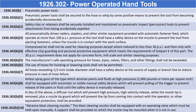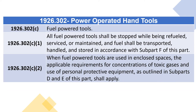1926.302(b)(9): In lieu of the above, a diffuser nut which will prevent high-pressure, high-velocity release while the nozzle tip is removed, plus a nozzle tip guard which will prevent the tip from coming into contact with the operator, or other equivalent protection shall be provided. 1926.302(c) Fuel Powered Tools. 1926.302(c)(1): All fuel powered tools shall be stopped while being refueled, serviced, or maintained, and fuel shall be transported, handled, and stored in accordance with subpart F of this part.